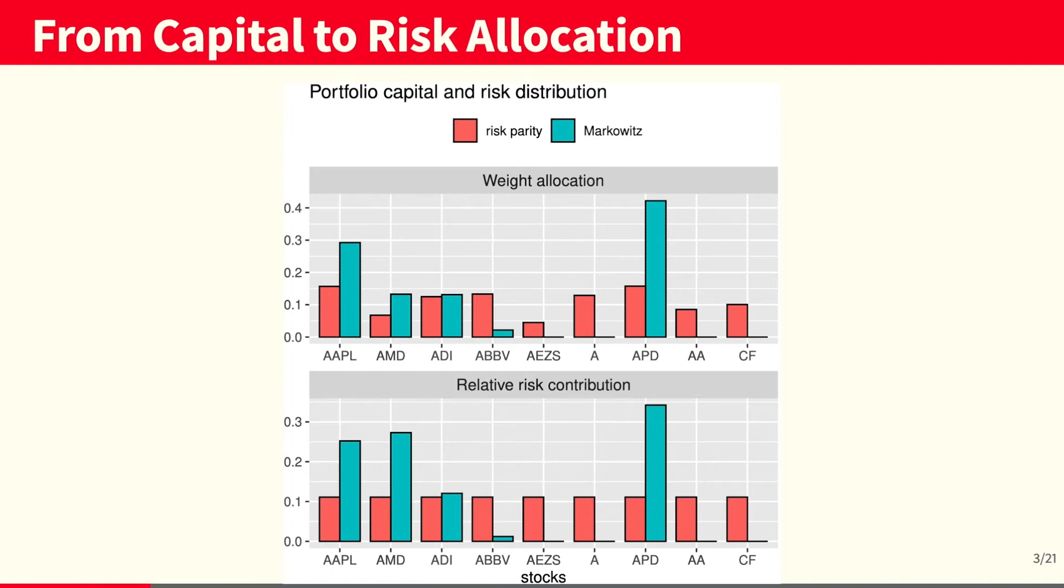On the bottom chart, we see the key idea of risk parity, where it allocates the risk in a uniform way, whereas Markowitz allocates risk to only a few stocks.